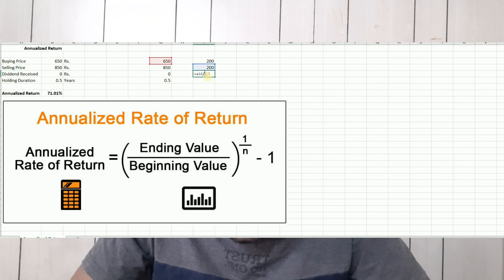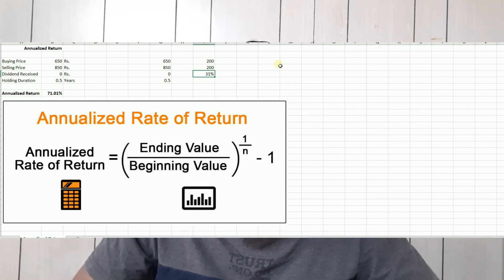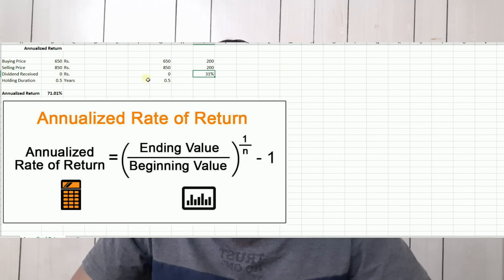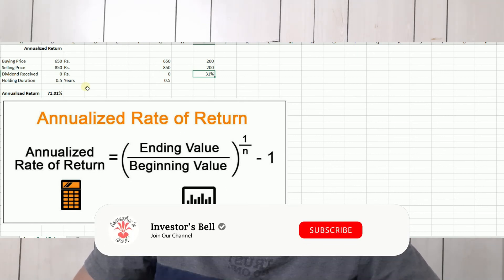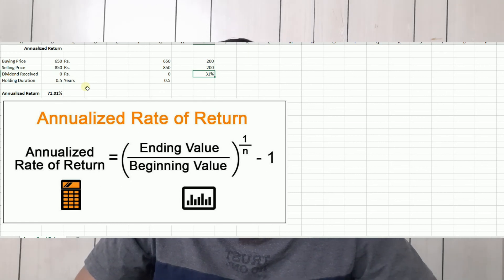You divide 200 by the buying price to get about 31%. But if you apply the annualized return formula, you get 71%. If you have the annualized return, you can compare this to a bond's rate of interest. This is a high return.